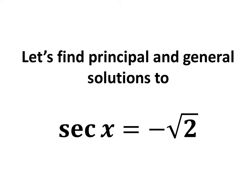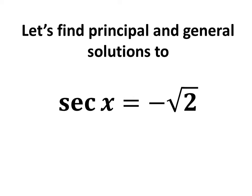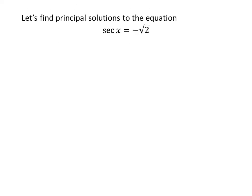In this video, we will learn to find the principal and general solutions to the equation secant of x is equal to minus square root of 2. Let us first find the principal solutions. We know the solutions to the trigonometric equation for which x is greater than or equal to 0 and less than 2 times pi are the principal solutions.